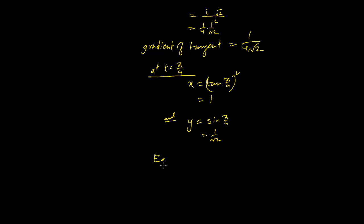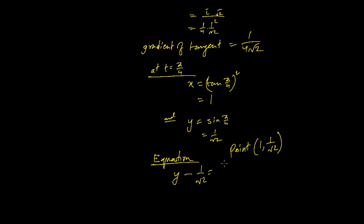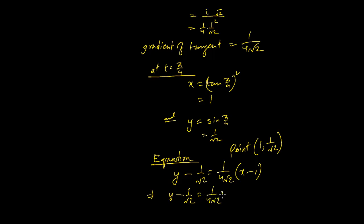So the equation of the tangent — the point is (1, 1/√2). The equation is y − y₁ = m(x − x₁). The gradient is 1/(4√2), so we write y − 1/√2 = 1/(4√2) × (x − 1), giving y − 1/√2 = (1/(4√2))x − 1/(4√2).